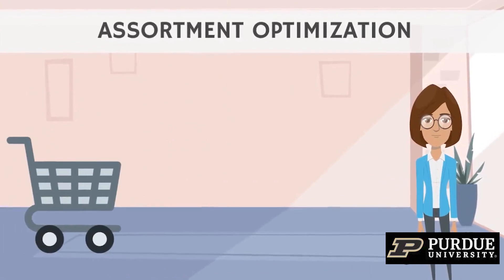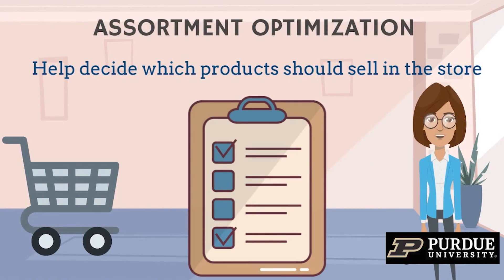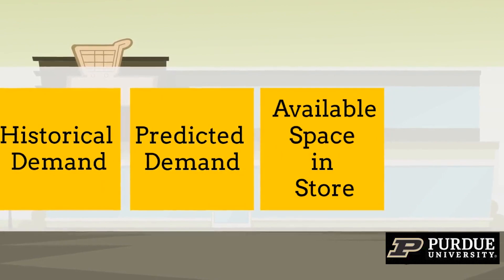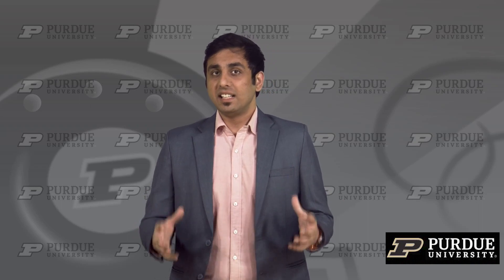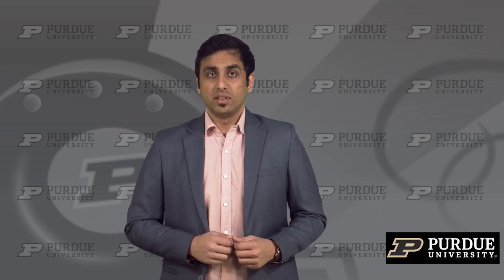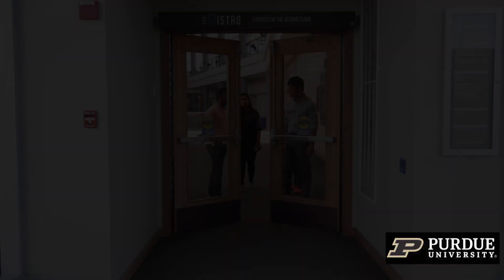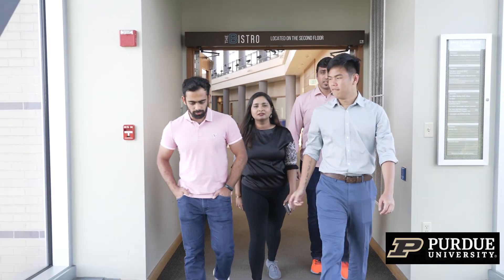Assortment optimization is a framework that helps businesses understand which products they should choose to sell in a store. These decisions can be made on the basis of various factors and constraints such as historic demand, predicted demand, the store's available space, and the budget. These factors applied to a robust assortment optimization-based retail strategy would lead to better profits at the store level and eventually at the company level, as well as a simplified supply chain optimization exercise.